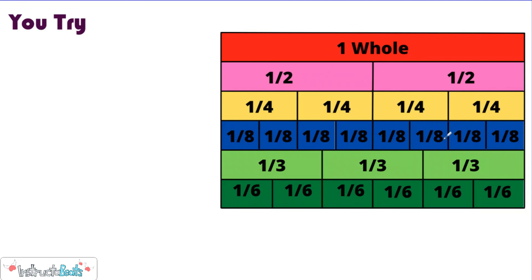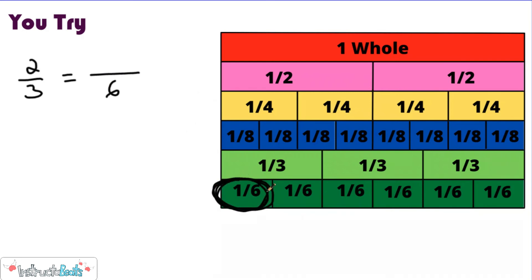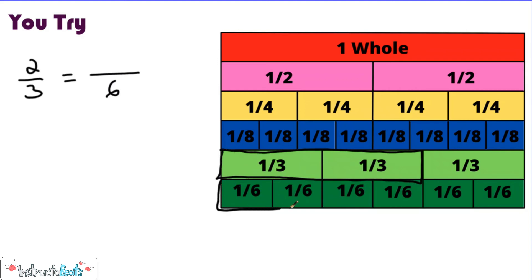So we're going to do a U-try. I've given you all the fraction strips together so you can use this to estimate if you need to. What I want to figure out is: is it possible to build a fraction that is equivalent to two thirds using sixths? Here's your unit fraction for sixths. How many sixths would I need — if it's even possible — to make something equivalent to two of my thirds? Pause the video and see if you can use the fraction strips to figure that out. Write it down on your paper, then push play to check your work. If I had two thirds, I would need two of these unit fractions put together. And if I have four sixths, these are equivalent — they are the same size. So two thirds is equivalent to four sixths.